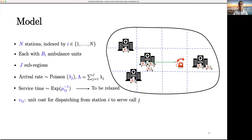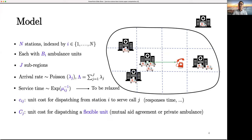The cost to dispatch from station i to serve call j is known as C_ij. We also introduce big C_ij as cost for dispatching a flexible unit, such as a private ambulance or a unit from a nearby restriction, according to the mutual aid policy. Our goal is to minimize the average cost per arrival.